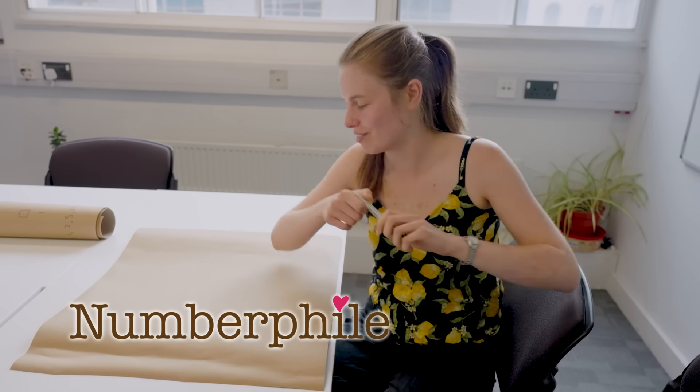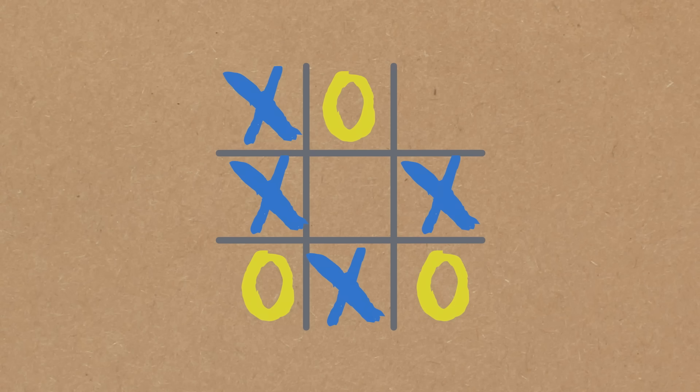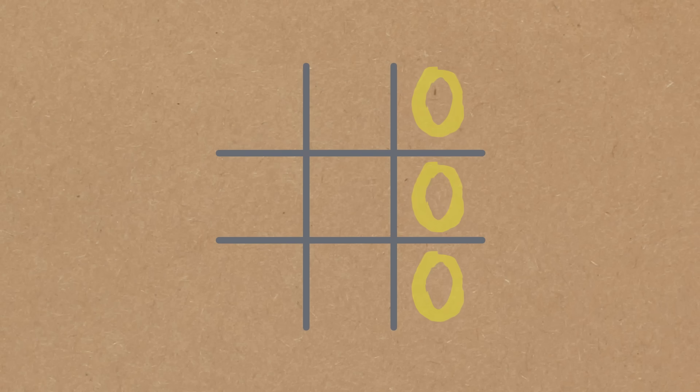We're going to play tic-tac-toe, but different. So we've got the normal tic-tac-toe, right? You've got your little grid, you've got your noughts and crosses, and you win if you've got a whole row or column or diagonal.